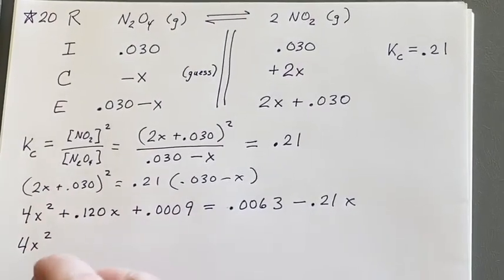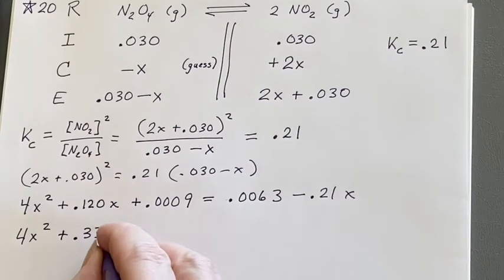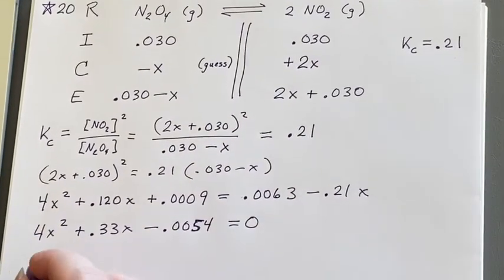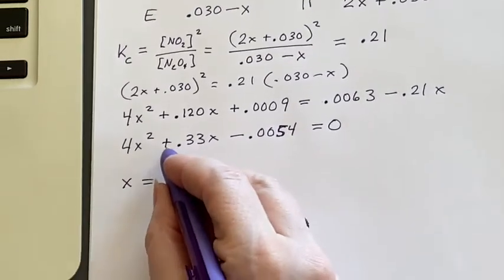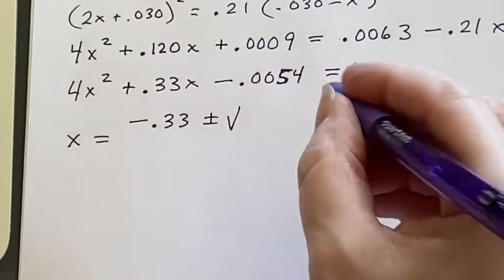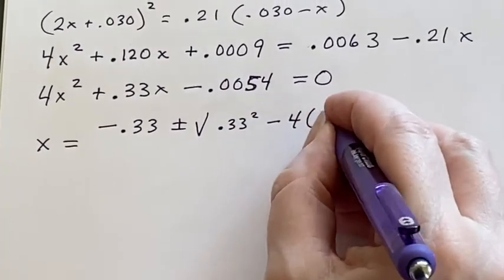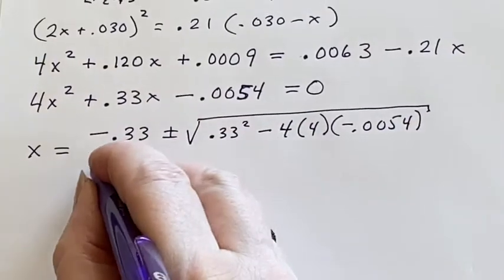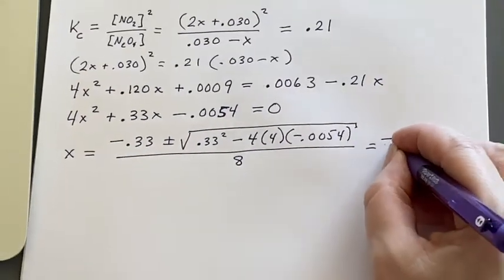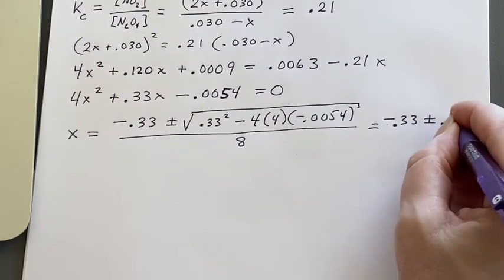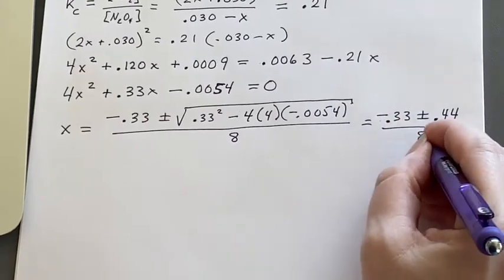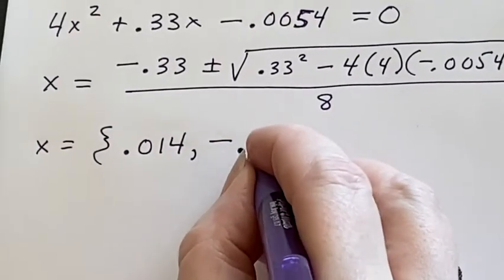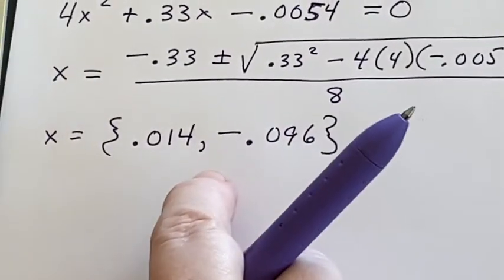When I do that I'll get 4x squared plus 0.33x minus 0.0054 equals 0. Quadratic formula: x equals minus b minus 0.33 plus or minus the square root 0.33 squared minus 4 times a which is 4 and c which is a negative number 0.0054 over 2a. So I'm going to end up with x being equal to negative 0.33 plus or minus 0.44 over 8. So that gives me two possibilities: 0.014 or negative 0.096.